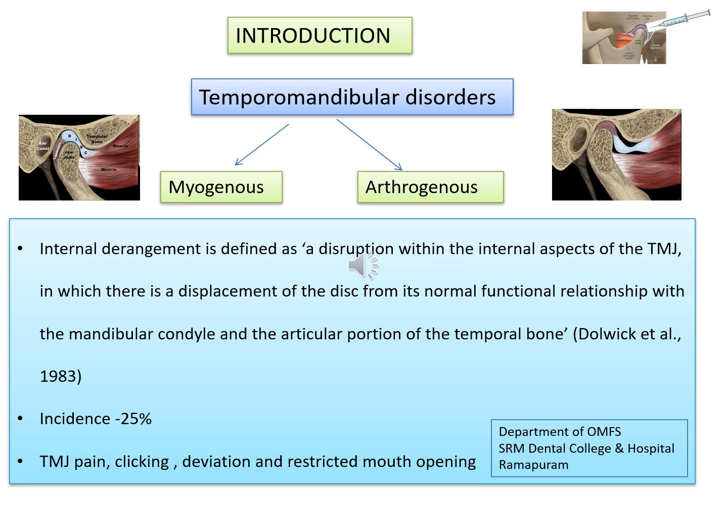Temporomandibular joint disorders are a common problem across the world. They have been categorized based on the origin of the problem into myogenous, involving the muscles, and arthrogenous, involving the joint. Dahlbeck in 1983 defined internal derangement as a disruption within the internal aspects of the TMJ, in which there is a displacement of the disc from its normal functional relationship with the mandibular condyle and the articular portion of the temporal bone.